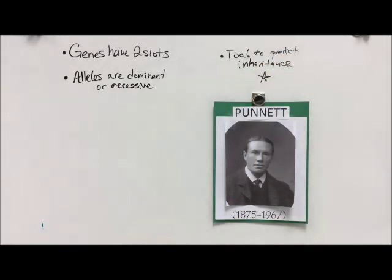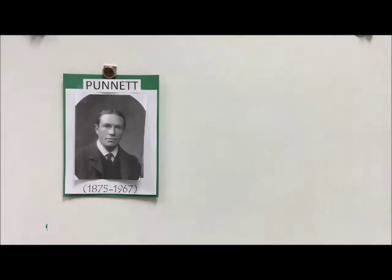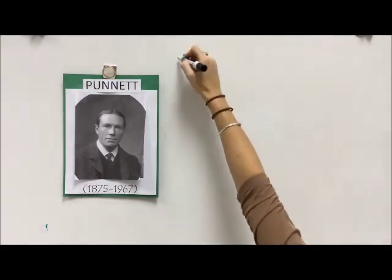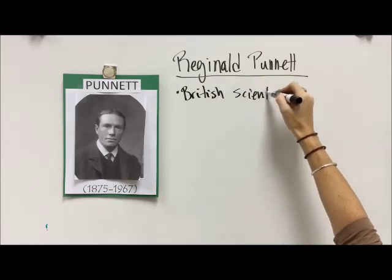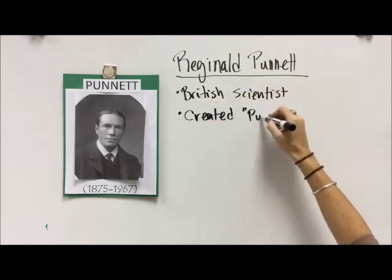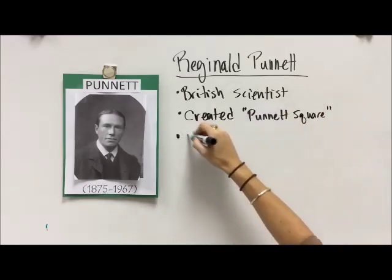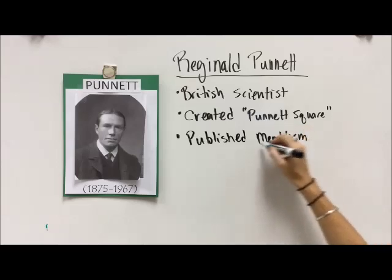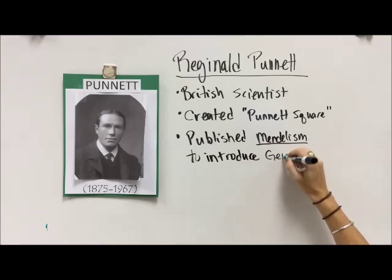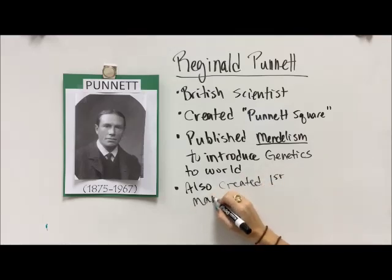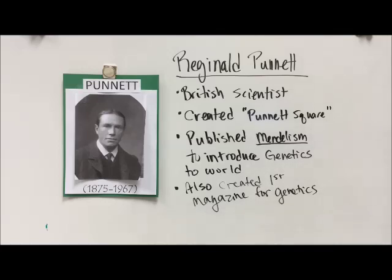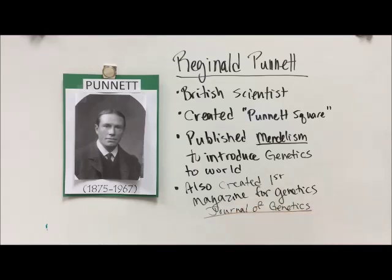The way it was done before was pretty messy, so let's talk about Reginald. Reginald Punnett was a British scientist, and the majority of his great work and contributions to science were done in the early 1900s. He created the Punnett Square, which is what we're going to learn about today. He also published the first book that gave genetics an introduction to the wider world, called Mendelism — a tribute to Gregor Mendel — and he created the very first magazine for genetics called the Journal of Genetics, still in publication today over a hundred years later.